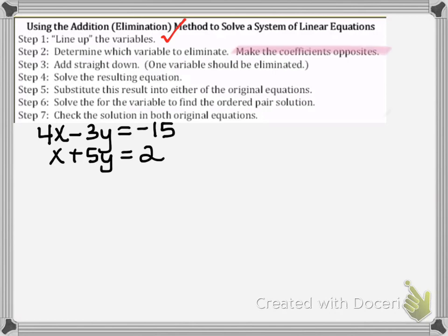Notice how it says we want to make the coefficients opposites. When you're deciding which variable to eliminate, I always say look through both equations and see if any of the variables have a coefficient of 1. In this second equation, our x variable has a coefficient of 1.